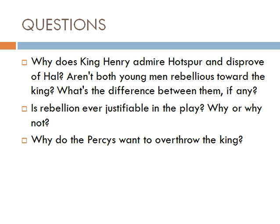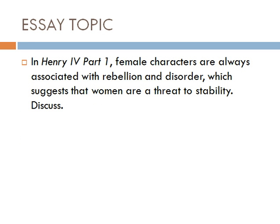Some questions to consider about order and disorder: Why does King Henry admire Hotspur and disapprove of Hal? Aren't both young men rebellious toward the king — what's the difference between them? Is rebellion ever justifiable in the play, and why or why not? Why do the Percys want to overthrow the king? An essay topic to consider: 'In Henry IV Part I, female characters are always associated with rebellion and disorder, which suggests that women are a threat to stability — discuss.' Find some quotes and develop your own interpretation of how this theme is presented in the play.